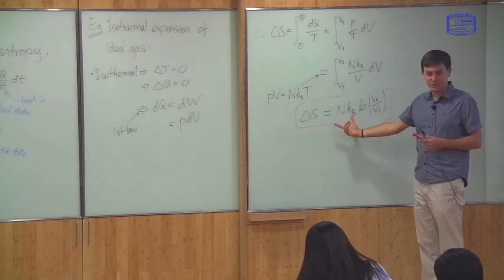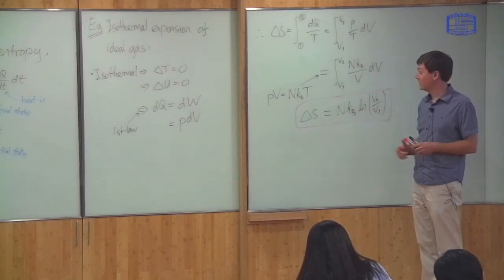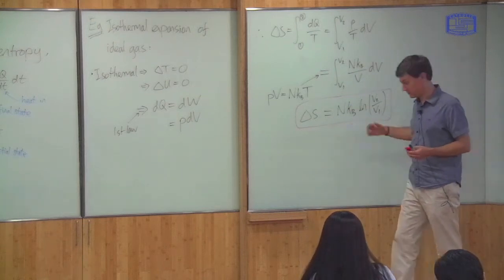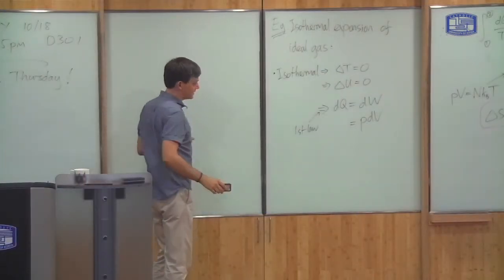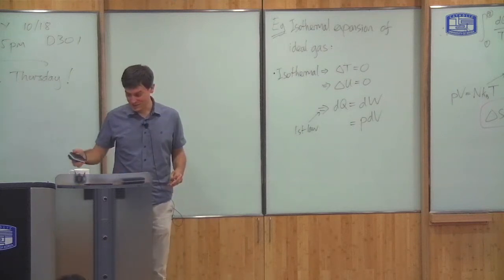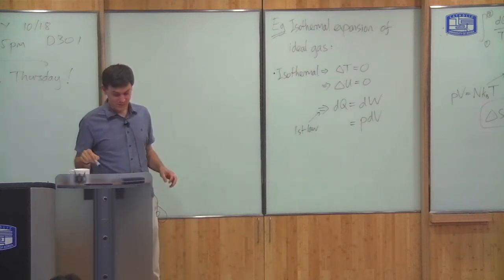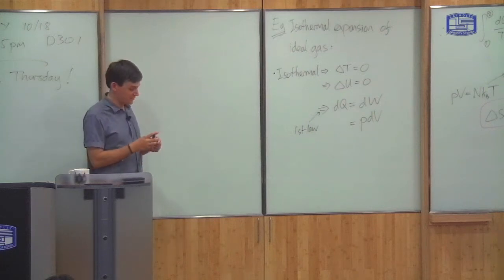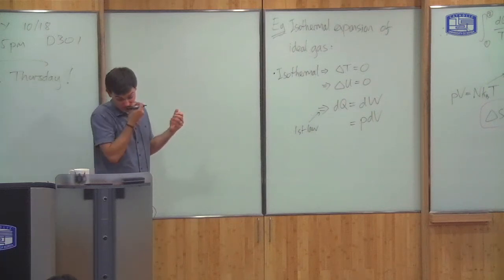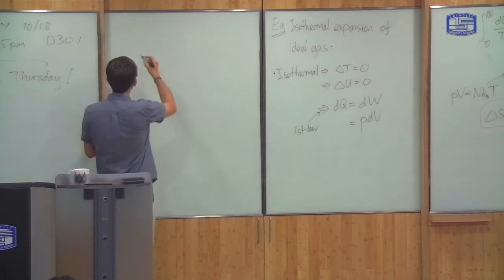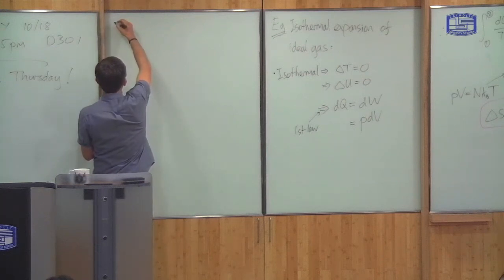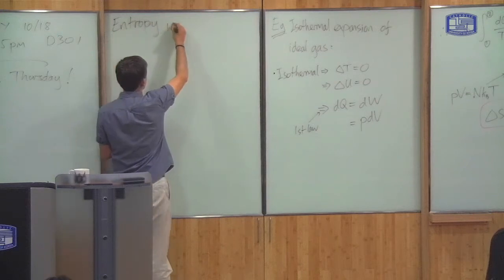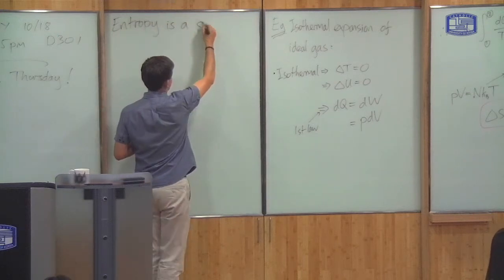So this is an example of how you can calculate entropy based upon the definition. For an isothermal expansion of an ideal gas you get this result. Now I've defined it — it's a bit of a strange definition. I want to explain why it's so important, and to do that I'm going to give you two results. The first one is that entropy is what's known as a state property.